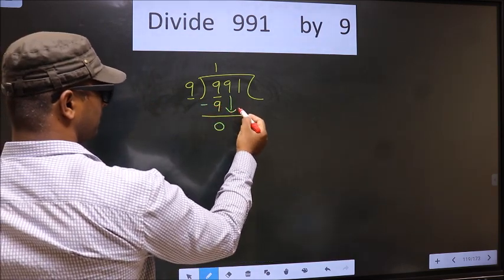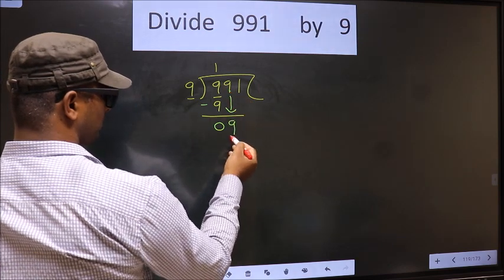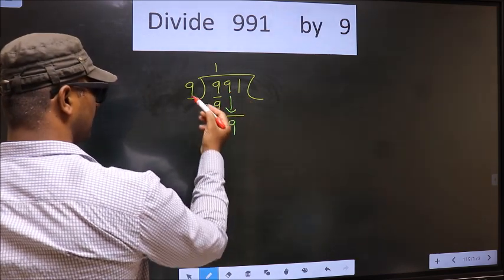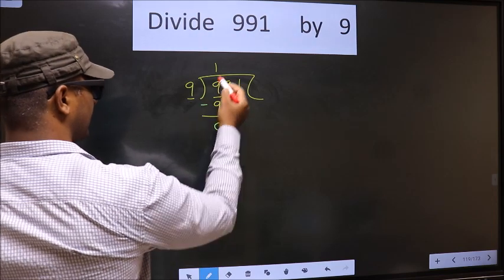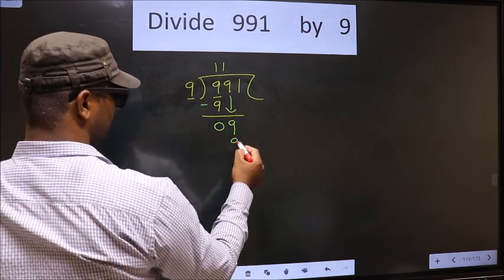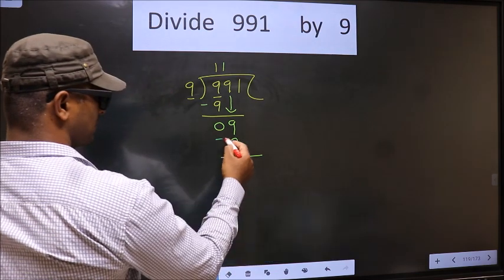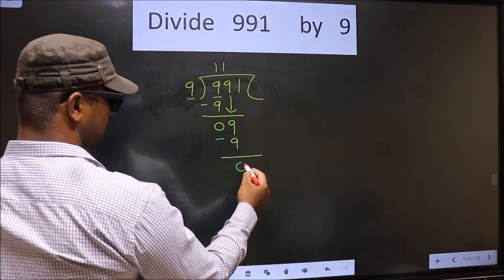Now you bring down the next number. So 9 down. 9 here. When do we get 9 in 9 table? 9 once 9. Now you subtract. 9 minus 9, 0.